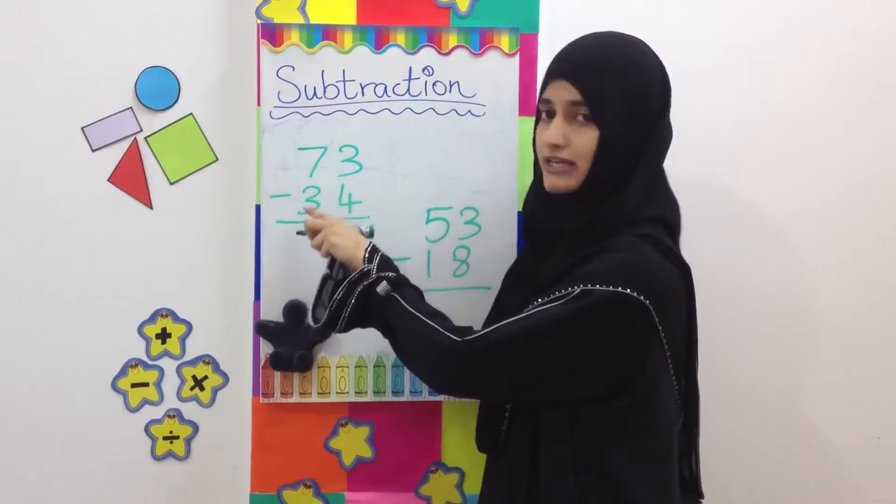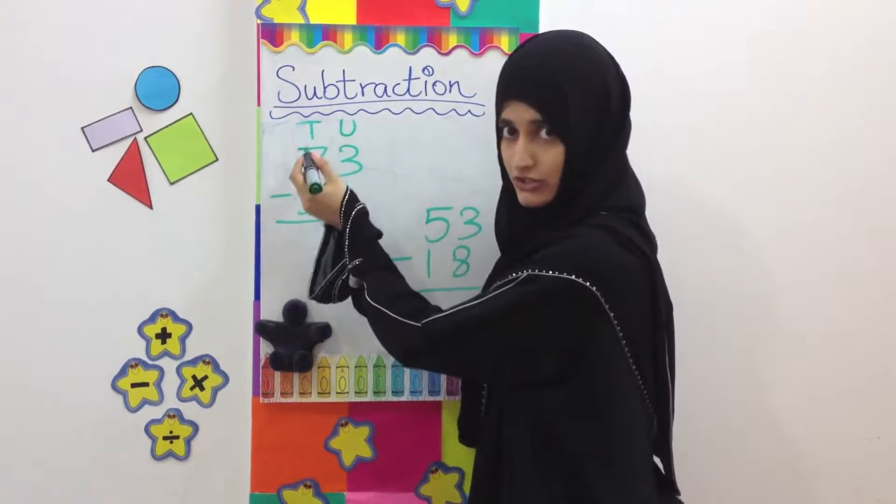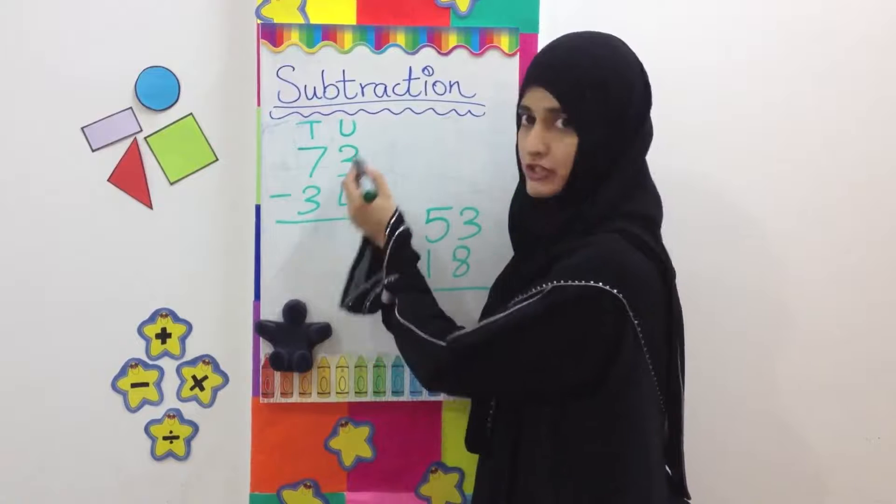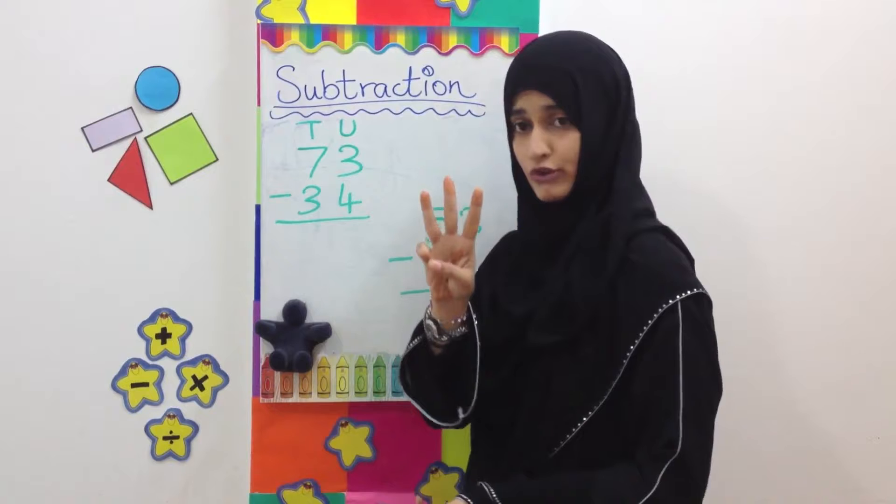The question is 73 minus 34. Again, this is a question where we have to borrow. We write units and tens on the top and start working on the unit side. Here we have 3 units but we have to take away 4.